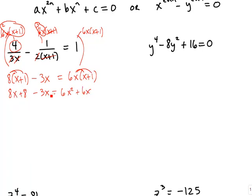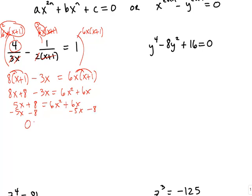This is a quadratic equation because we see x squared. Whenever you have a quadratic equation, it's always a good idea to get a zero on one side. On the left side, 8x minus 3x is 5x. We subtract 5x and 8 to the right side, giving us 0 = 6x² + x − 8.